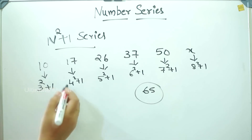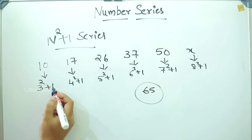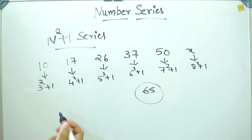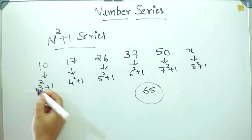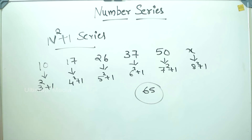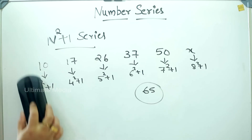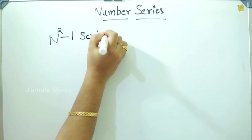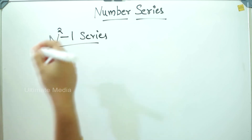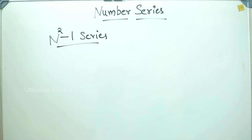This is another pattern: n squared plus 1. This is a series — not just a plain square, but n squared plus 1. The next series is n squared minus 1. This n squared relates to n cubed as well.